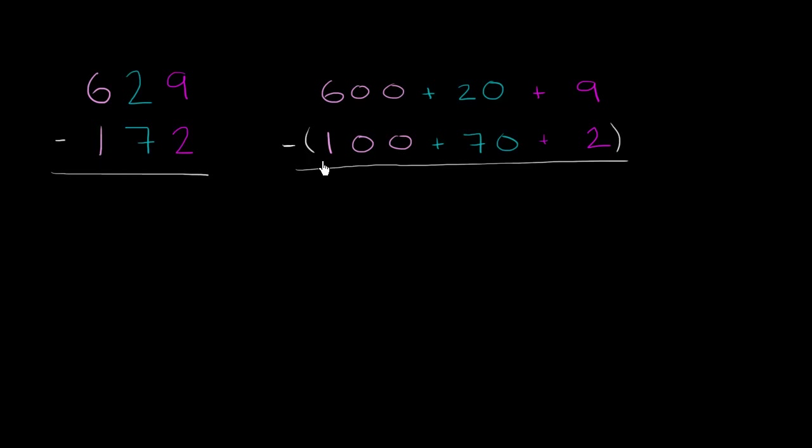I rewrote 172. The 1 is 100, so that's there. This is 7 tens. It's in the tens place, so it's 70. And then the 2 just represents 2. We'll see why this is useful in a second. So let's start subtracting.